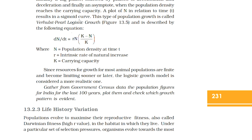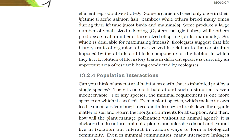13.2.3 Life History Variation. Populations evolve to maximize their reproductive fitness — also called Darwin's fitness or higher R-value — in the habitat in which they live. Under a particular set of selection pressures, organisms evolve towards the most efficient reproductive strategy. Some organisms breed only once in their lifetime, such as Pacific salmon fish and bamboo, while others breed many times during their lifetime, such as most birds and mammals. Some produce a large number of small-sized offspring, e.g., oysters and pelagic fishes, while others produce a small number of large-sized offspring, such as birds and mammals. Ecologists suggest that life history traits of organisms have evolved in relation to the constraints imposed by the abiotic and biotic components of the habitat in which they live.